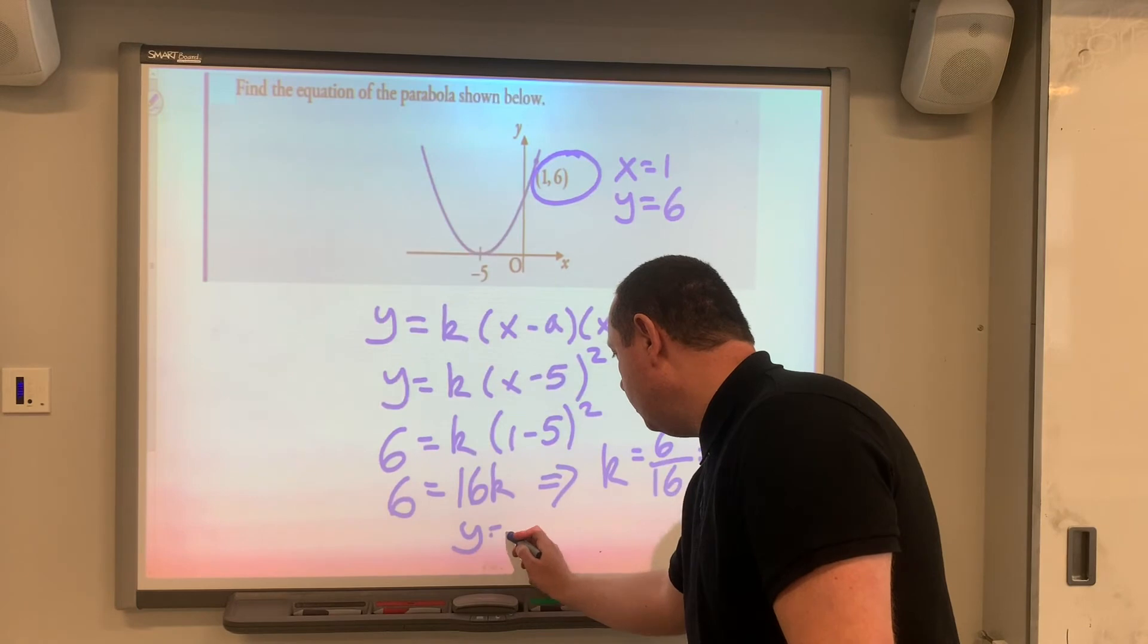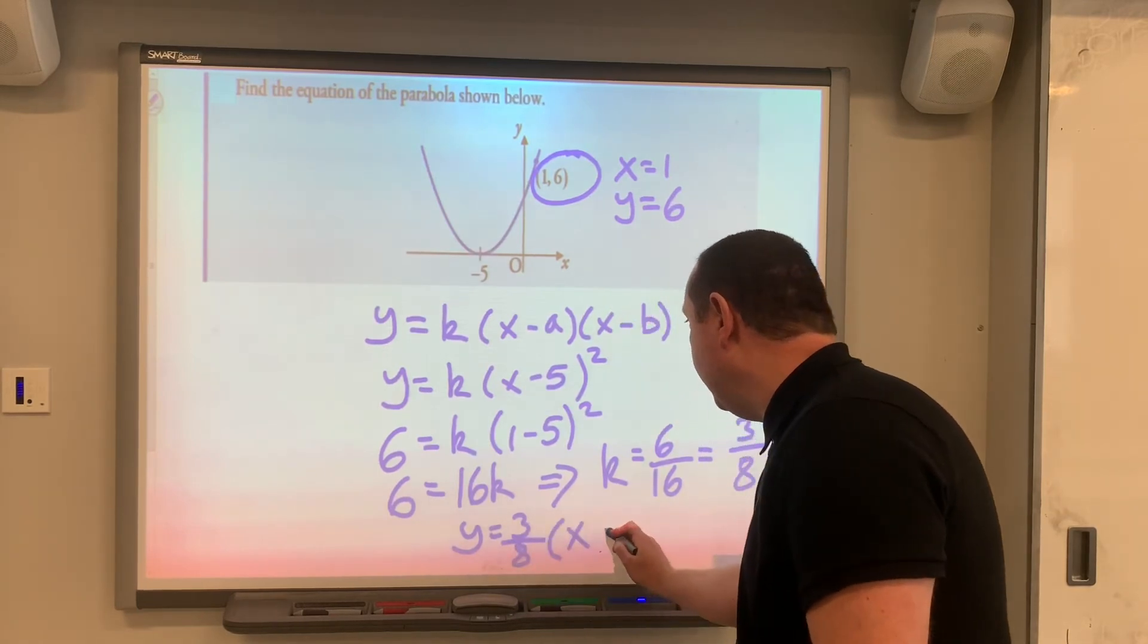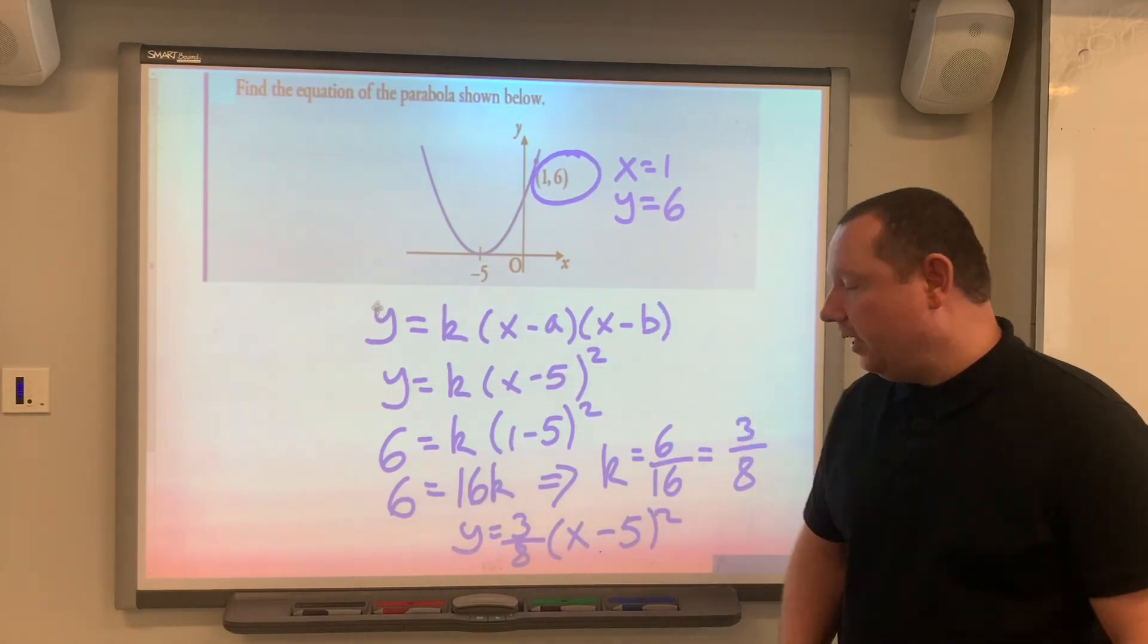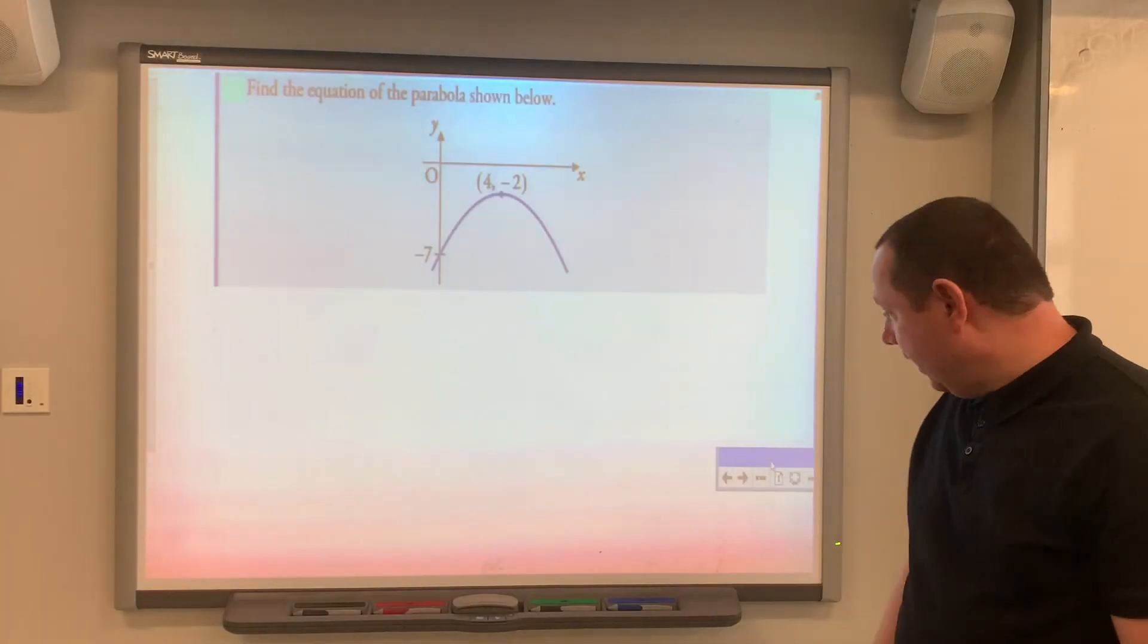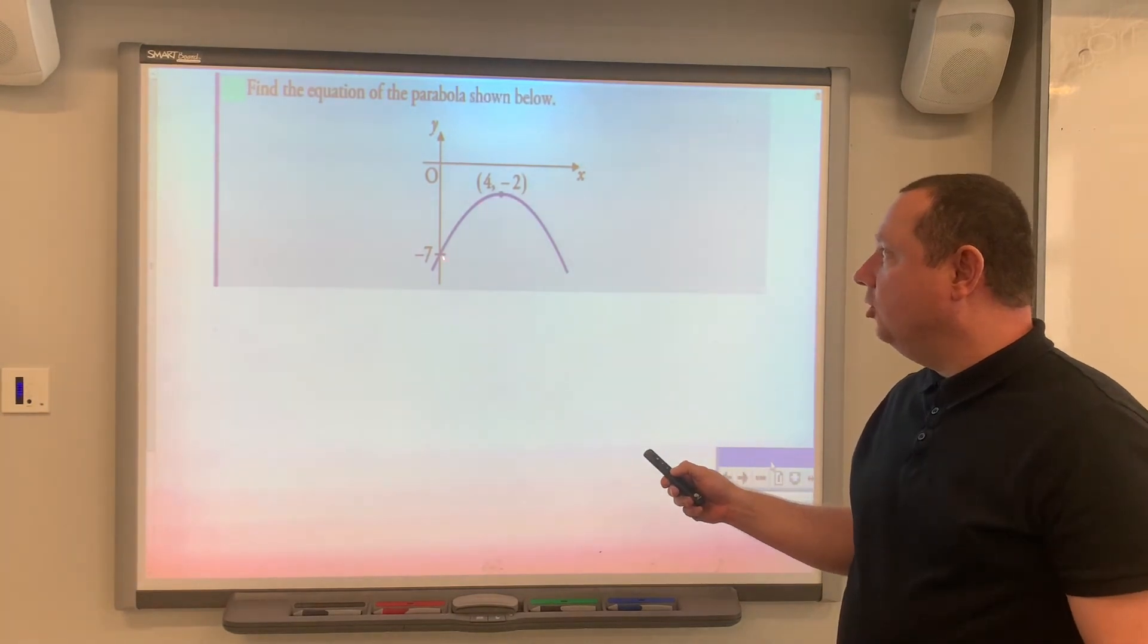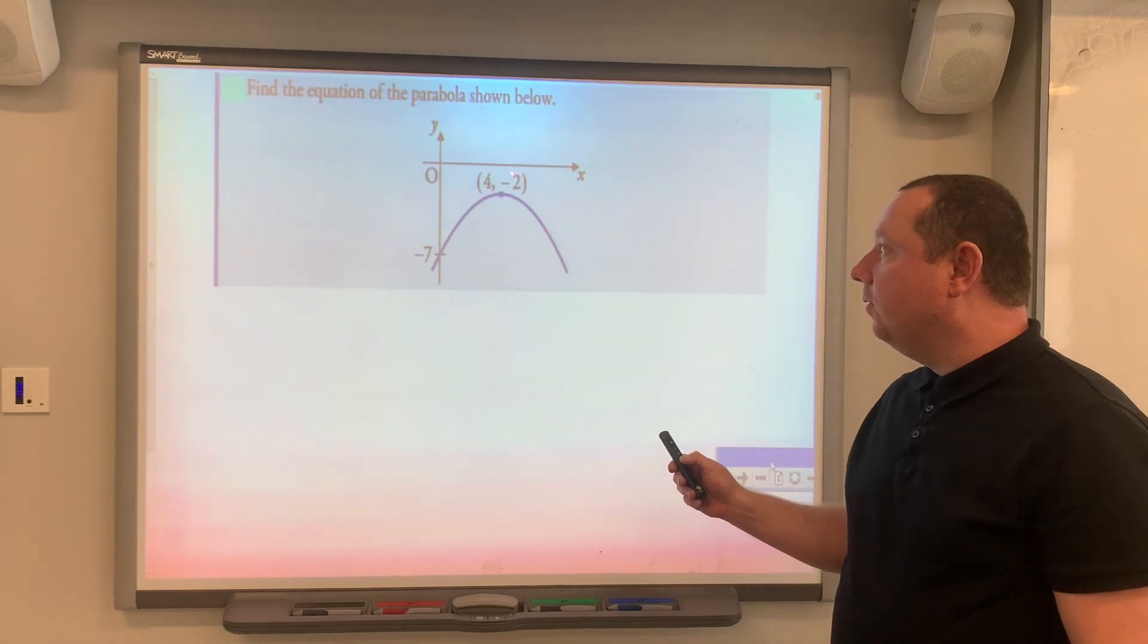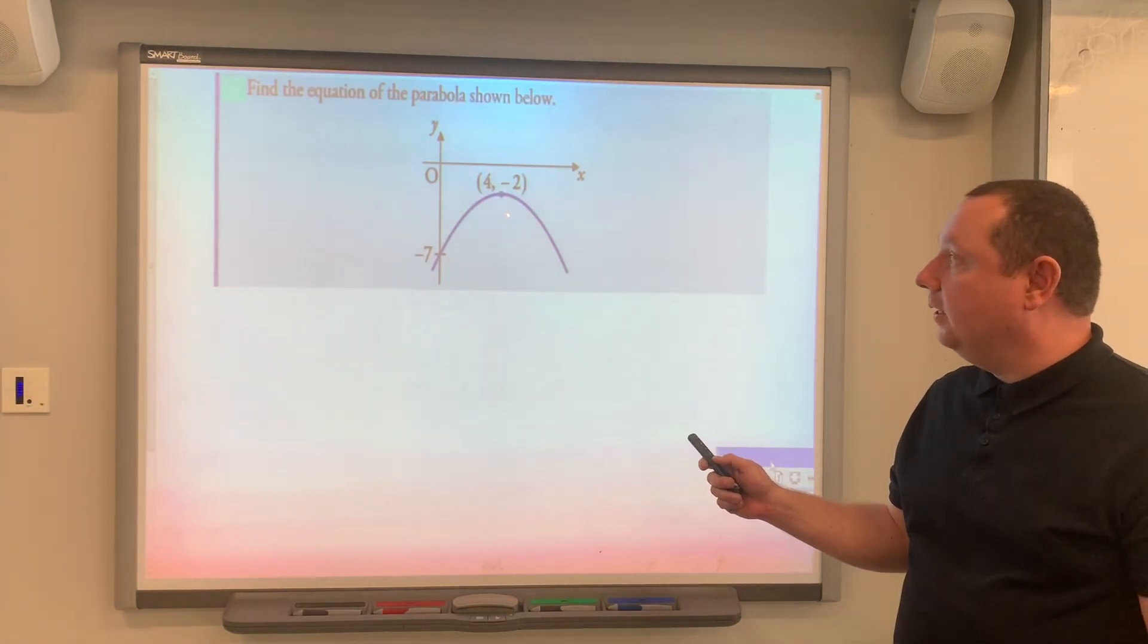y equals 3/8 times (x minus 5) all squared. So the last example: find the equation of the parabola shown. Notice this time there's no actual root, so it doesn't cross the x-axis. So instead we're going to complete the square because we're given the turning point, so we can use completing the square.